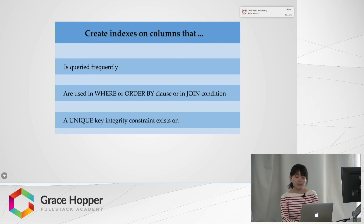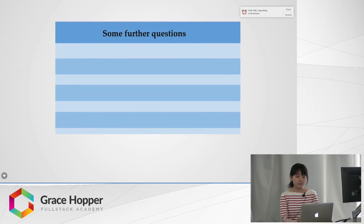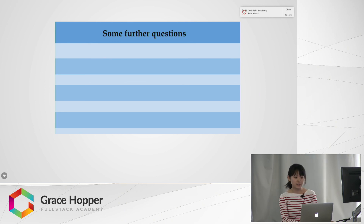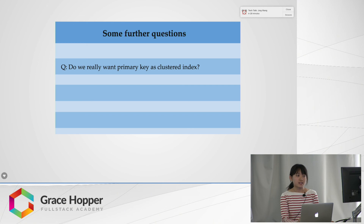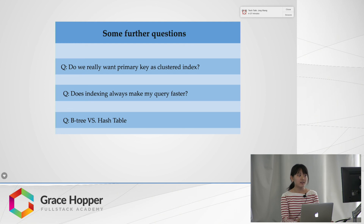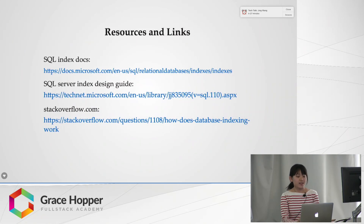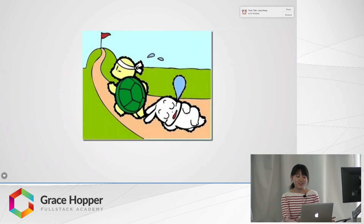In addition, most database systems require that unique indexes be created when unique constraints or primary key constraints exist. Now I have answers for the three questions, and I've come up with some further questions: Do we really want the primary key as a clustered index? Does indexing always make queries faster? And why do we use a B-tree data structure instead of a hash table? If you're interested, you can think about them. Here are also some links for further reading. I hope you enjoy indexing and enjoy faster querying — and even when it's not faster, I hope you'll know why and what's behind it. Thank you.